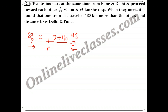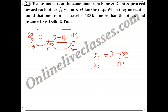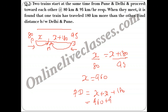Since both trains started at the same time and travel until they meet, their travel times are equal. So distance/speed must be equal: x/80 = (x+180)/95. Solving gives x = 960 km. Therefore the total distance PD = x + (x + 180) = 960 + 960 + 180 = 2100 km.